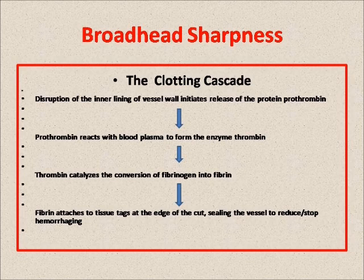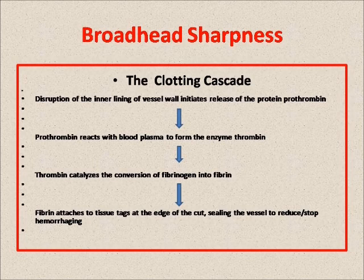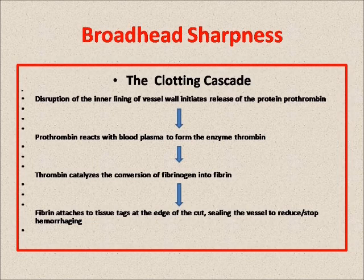Now let's talk for just a minute about broadhead sharpness and its importance. This is what's called the clotting cascade, sometimes known as the hemorrhaging cascade. It's the physiologic process the body uses to seal off a bleeding blood vessel. When you cut a blood vessel, you damage some of the cells that line the inner wall. Every one of those damaged cells releases prothrombin — a protein that converts into the enzyme thrombin when it reacts with blood plasma. The thrombin then acts as a catalyst to convert fibrinogen into fibrin.